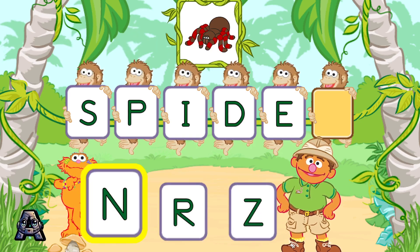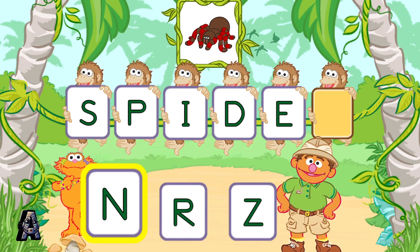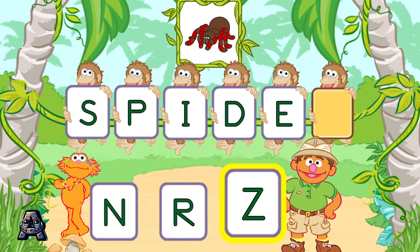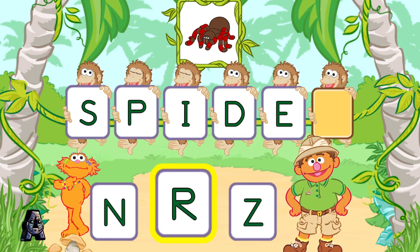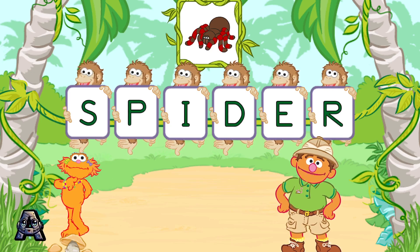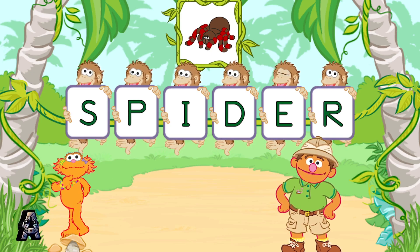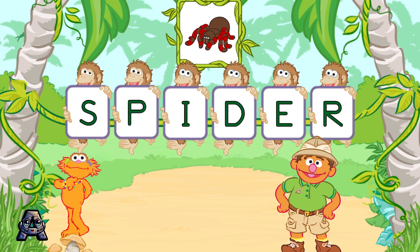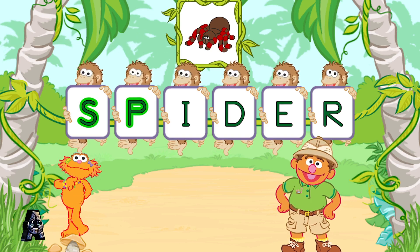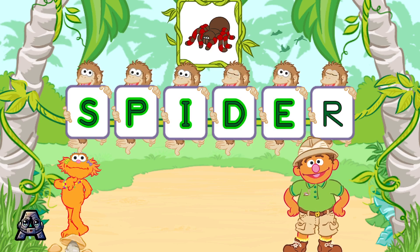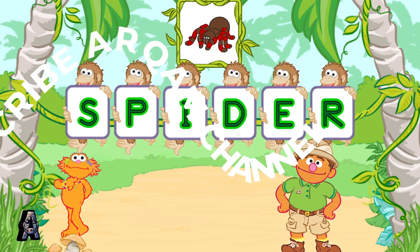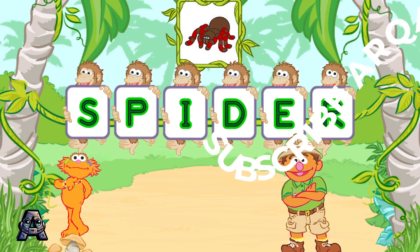Now, pick the letter R. Good job! Let's see — S, P, I, D, E, R. That spells spider. Like this one!